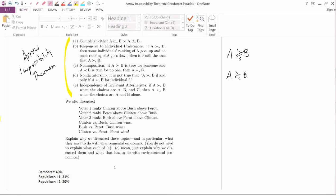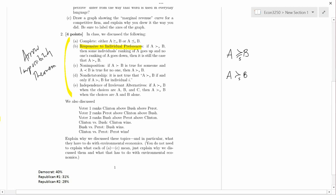How about B? B is called responsive to individual preferences. If society prefers A to B, and then some individual's ranking of A goes up and no individual's ranking of A goes down, then it's still the case that society prefers A to B. It demands that society makes decisions based on the preferences of the individuals in society. If the individuals in society change their mind in a way that makes more of them like A and less of them go the other way, then if society picked A before, it's going to still pick A. That's a very weak requirement.